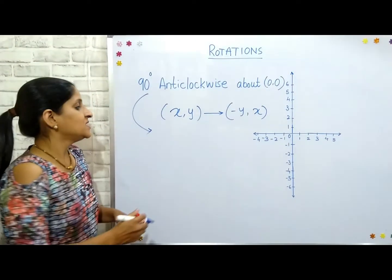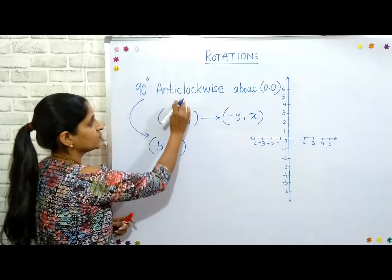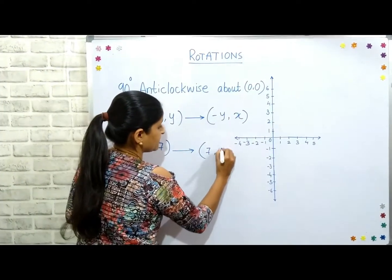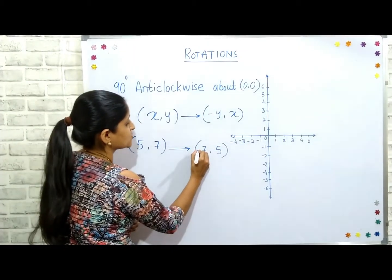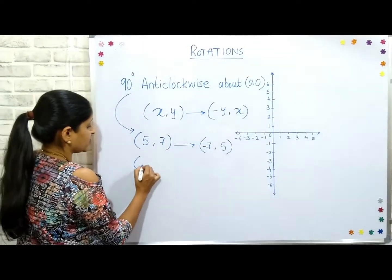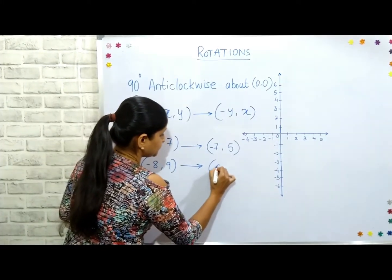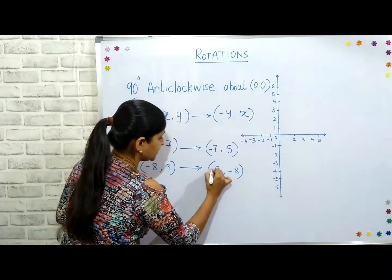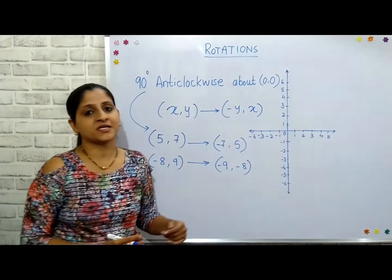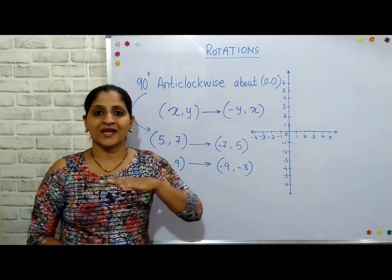Let's take one example. Suppose the coordinates given are (5, 7). Applying the 90-degree anti-clockwise rule, they flip to become (7, 5), and since the left coordinate must be negative, 7 becomes negative — giving (-7, 5). If the original coordinates are (-8, 9), they flip to (9, -8), and 9 on the left-hand side turns negative, giving (-9, -8).